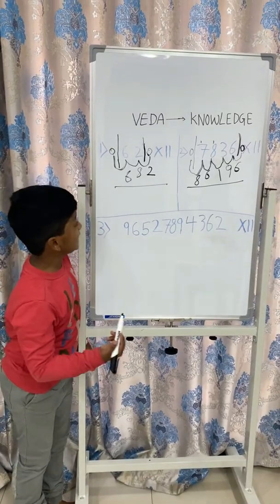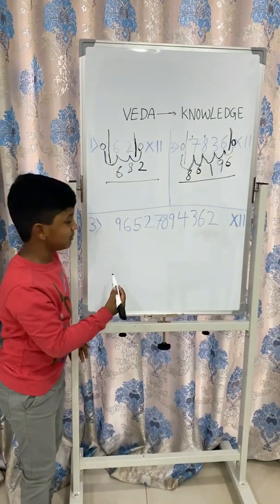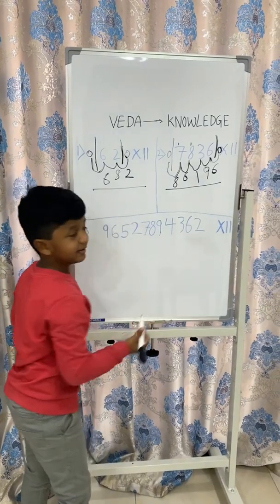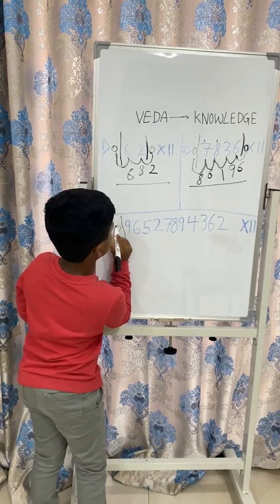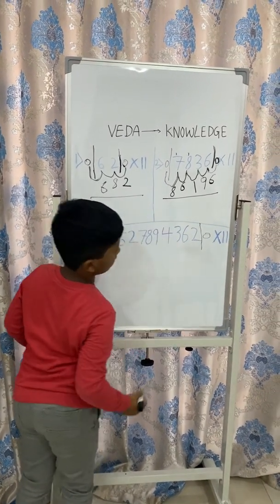See, it is so simple. Using the same method, you can multiply such a big number with the number 11. As I said earlier, you should add 0's at the beginning of the number and at the end of the number.